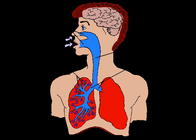Elastic fibers in the walls of the trachea, bronchioles, and alveoli help the process of breathing out. On breathing in, the lungs inflate and the elastic fibers are stretched. Then the fibers recoil to help push air out when exhaling.